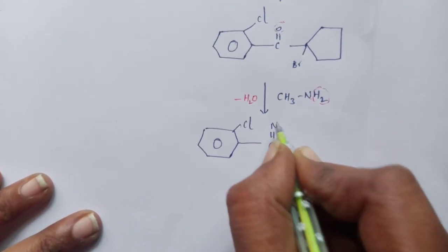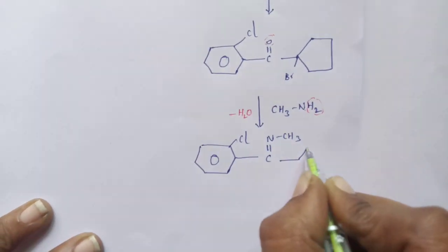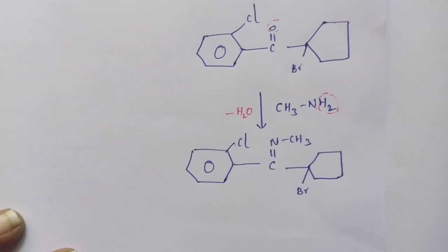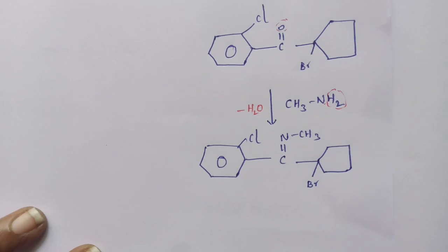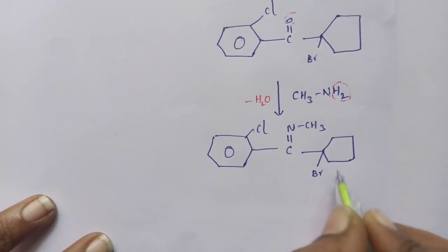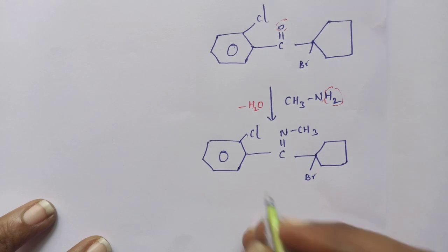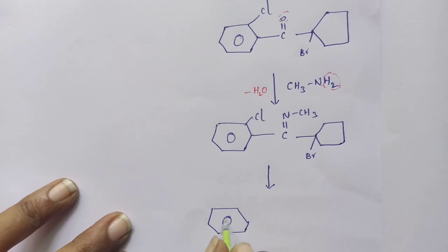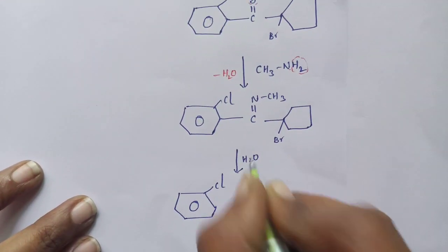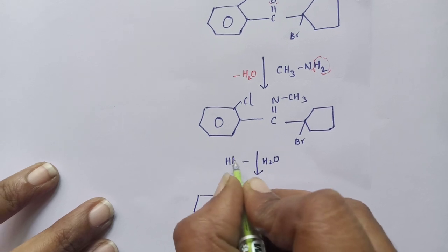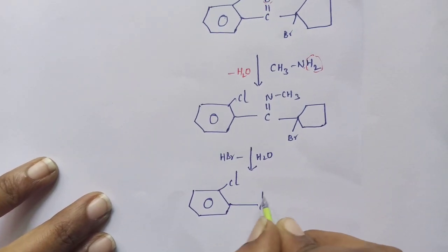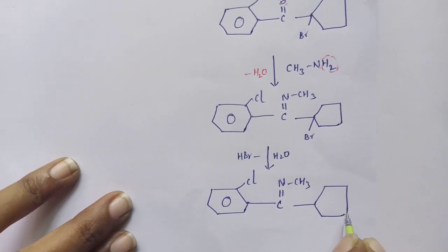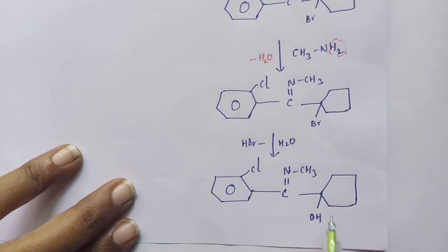The next step is hydrolysis. Upon hydrolysis, the bromide (Br) is converted into a hydroxyl (OH). In the presence of water there is loss of HBr, and finally it forms a structure with C=N-CH₃, cyclopentyl, and OH.